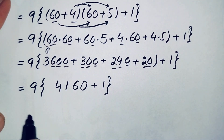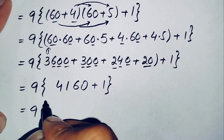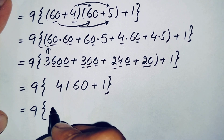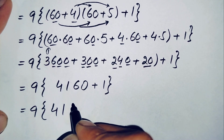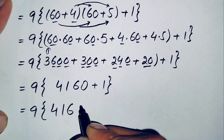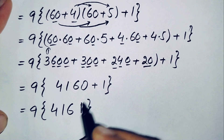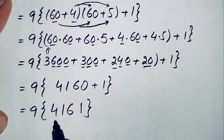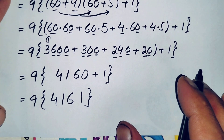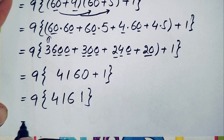So 64 times 65 equals 4160. Adding the 1 outside gives 4160 plus 1 equals 4161. Now finally we need to multiply 9 times 4161.